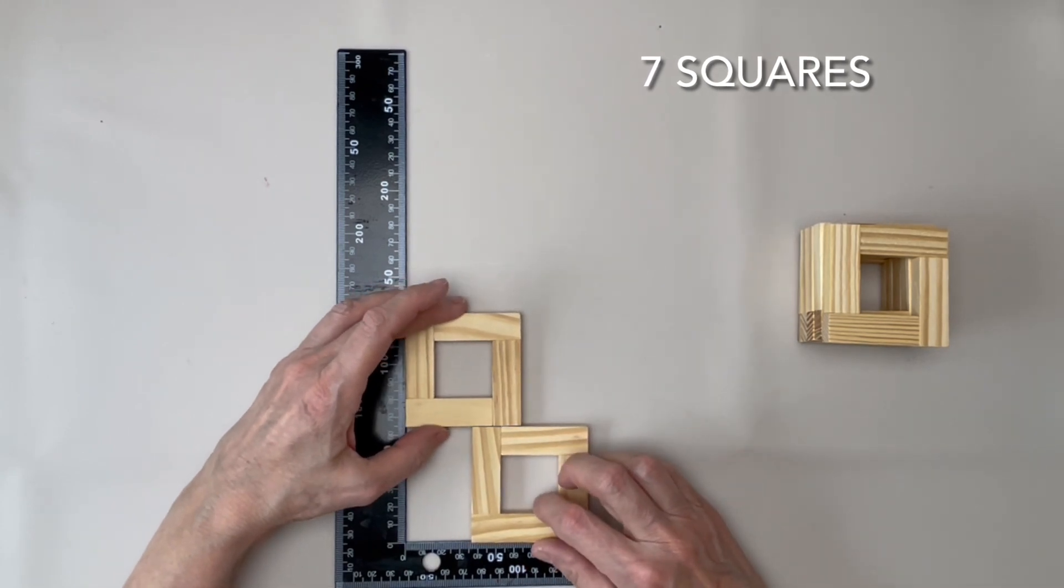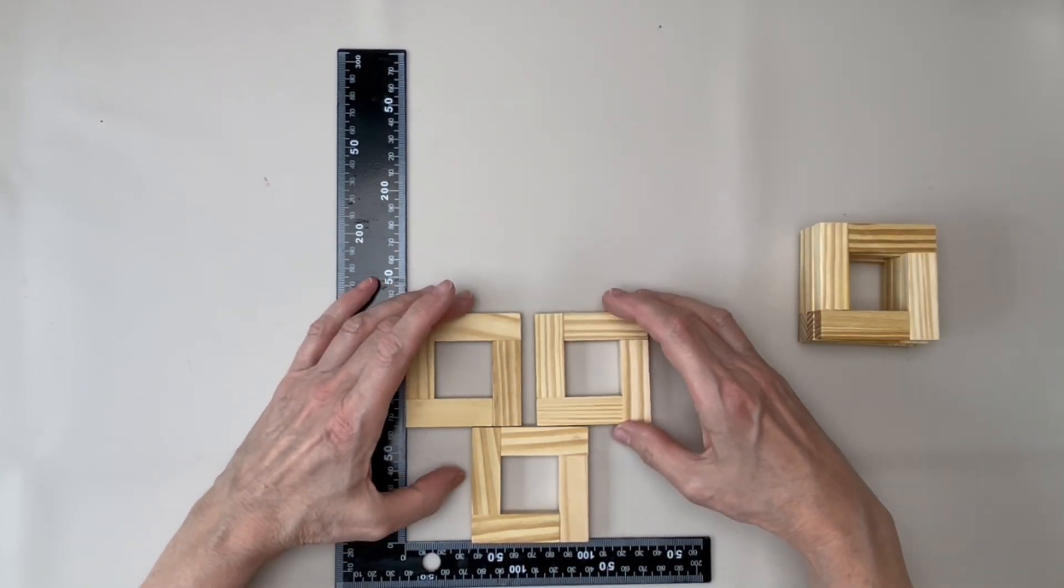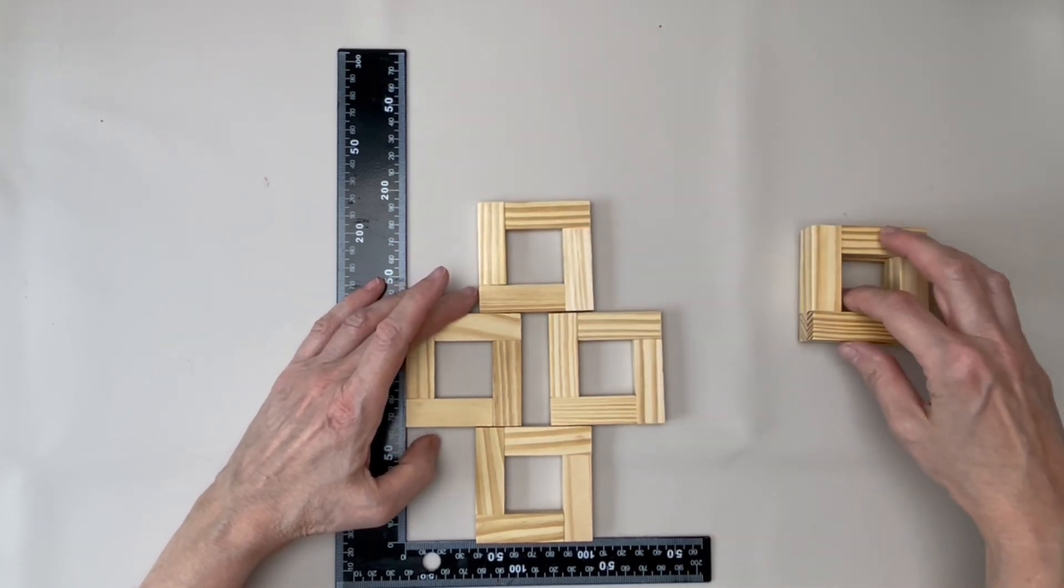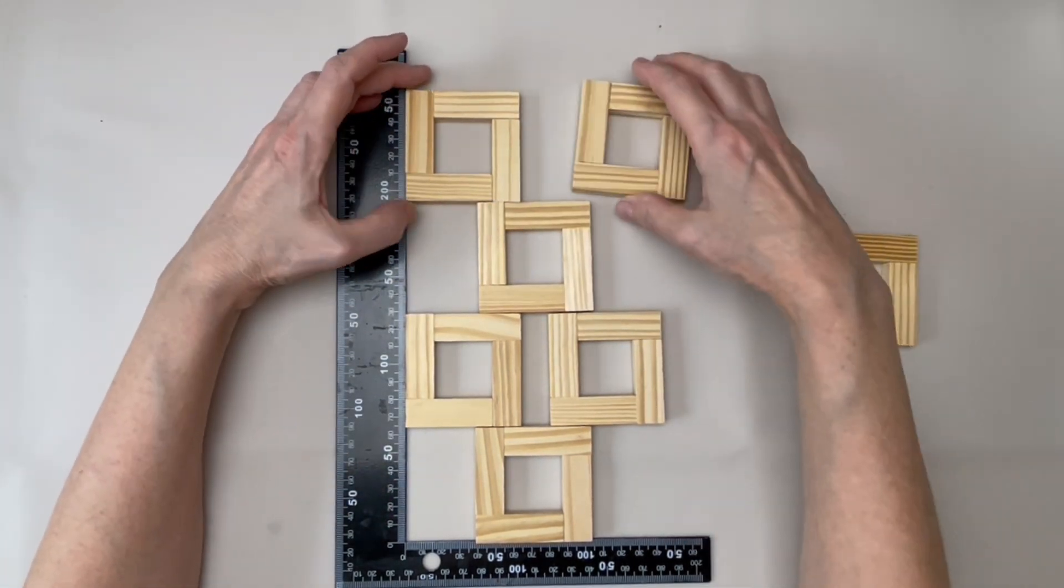The next side will be the opposite pattern. Do the same as before, using a block as a spacer. Glue the blocks together as you see on screen.